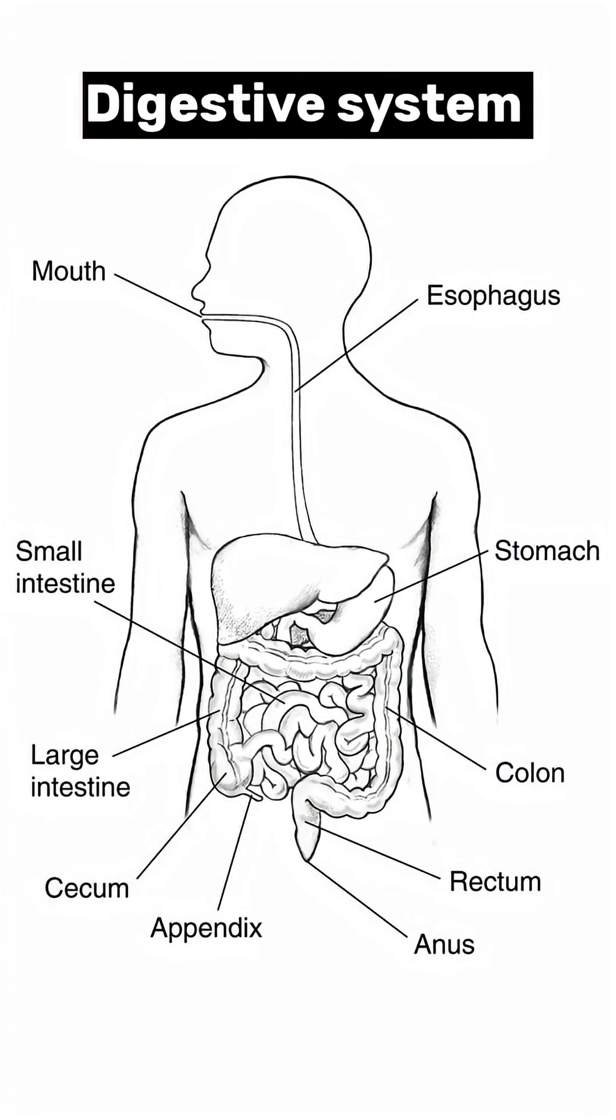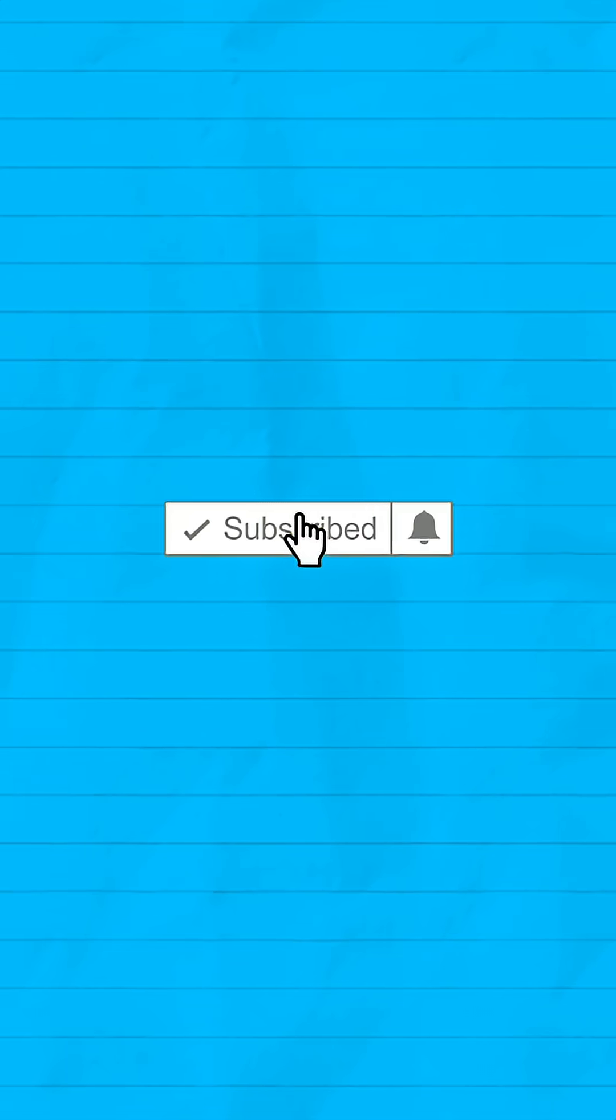In summary, the diagram provides a clear anatomical overview of the main organs of the digestive system, showing the pathway food takes from ingestion to elimination.